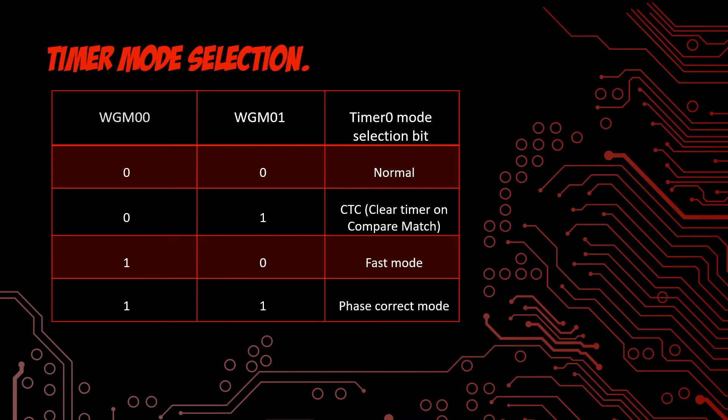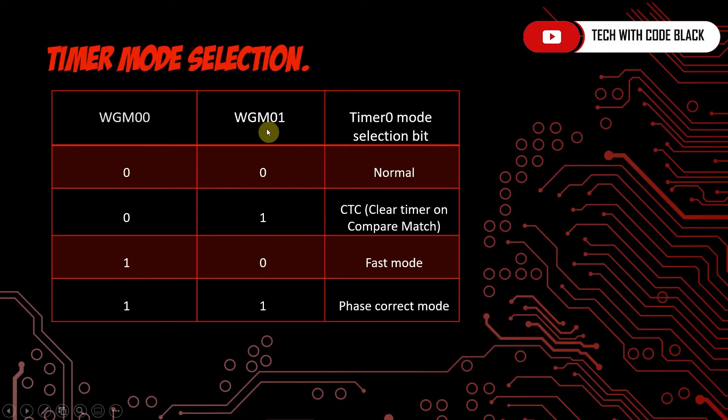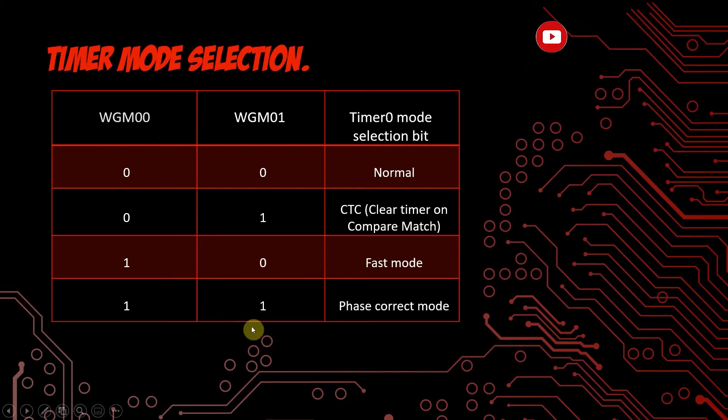For the timer mode selection of timer 0, WGM00 and WGM01 can be set in 4 different modes. For generating a PWM wave, we will use either the fast mode or the phase correct mode. For the fast mode, we set WGM00 as 1. To get the phase correct mode, we set both WGM00 and WGM01 bits as 1.